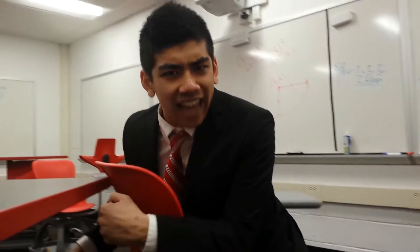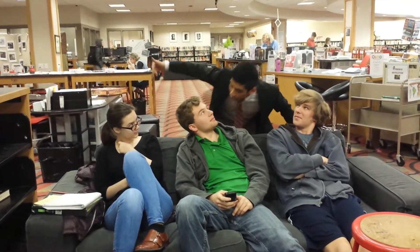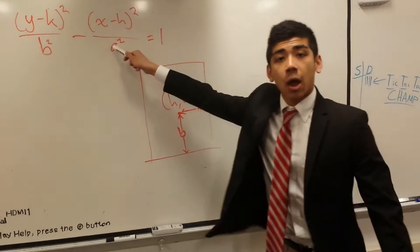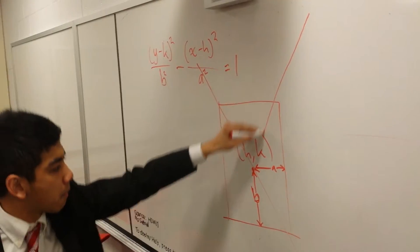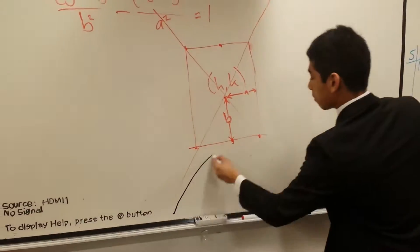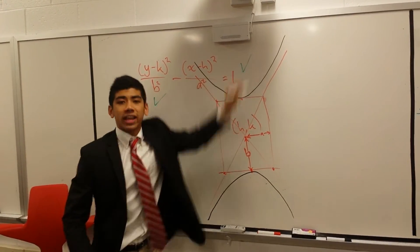Now can somebody please tell me how I'm gonna do my taxes? Hyperbolas are whack, so make sure that you listen. The terms down here are the squares of the distance. Draw your asymptote lines, the curve will never touch. The positive term is the way you open.